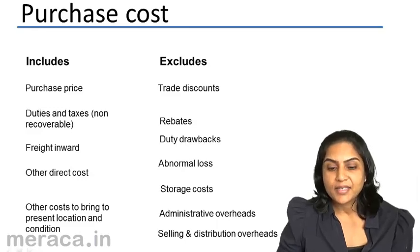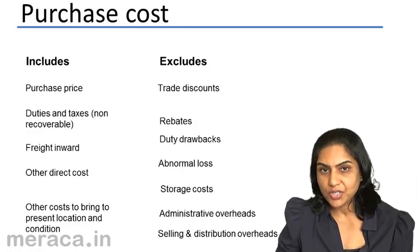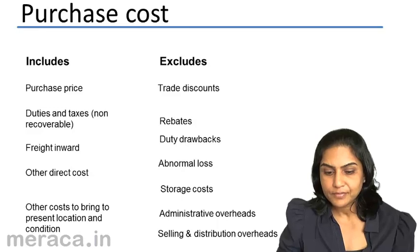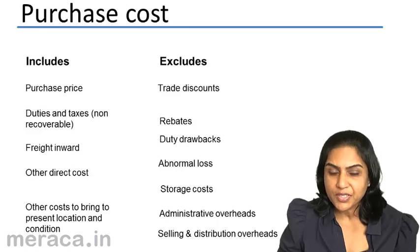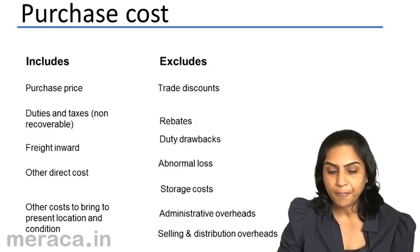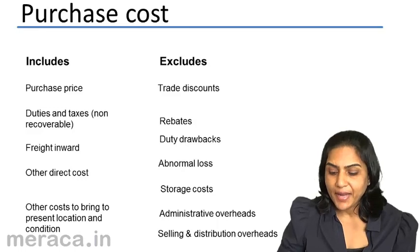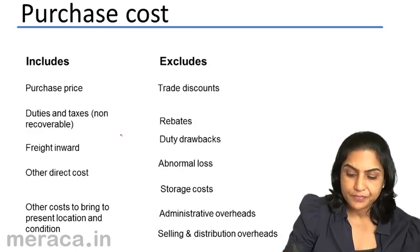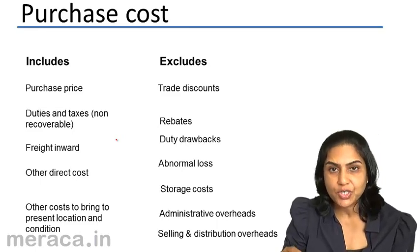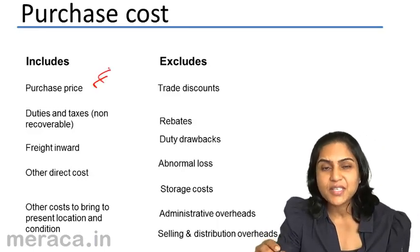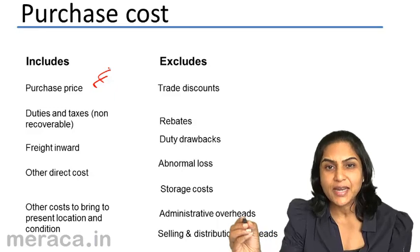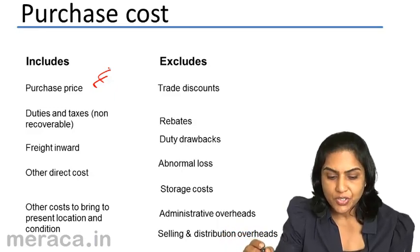Let us now look at the purchase cost. What is included? What are the components of a purchase cost? When we buy a commodity, when we procure an item, the price at which we buy the item is the purchase price. That is the first and major component of a purchase cost.